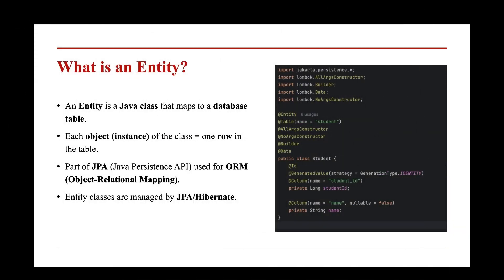We've used the word entity quite a few times, but what exactly is an entity? It's simple. An entity is just a Java class that maps to a table in your database. When you create a class in Java, you can tell JPA: 'Hey, this class represents that table in the database, and each field in this class represents a column.' On the screen, you're seeing a student entity. Each object or instance of this class represents one row in that table. So to break it down: Java class is database table, object is row, field is column.